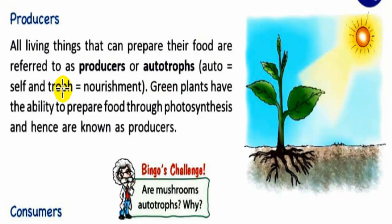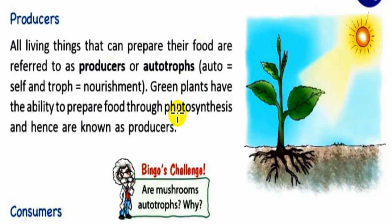Auto means self and troph means nourishment, so autotrophs means self-nourishment — organisms that can prepare their own food. Green plants prepare their own food through photosynthesis. Therefore, green plants are known as producers.